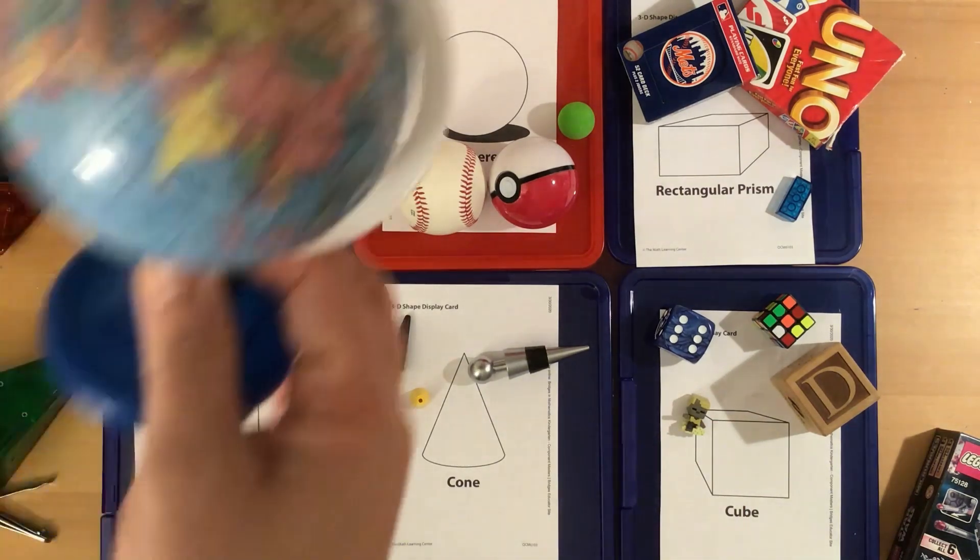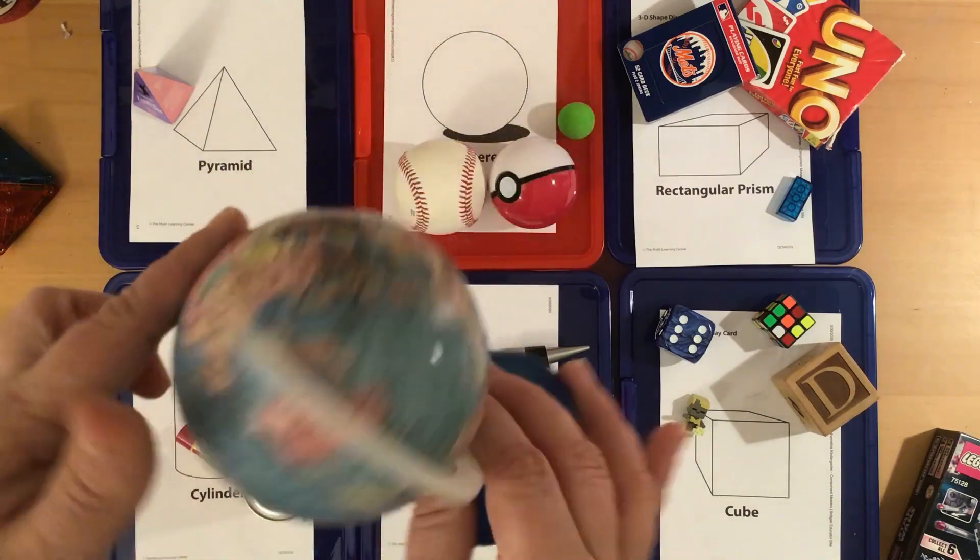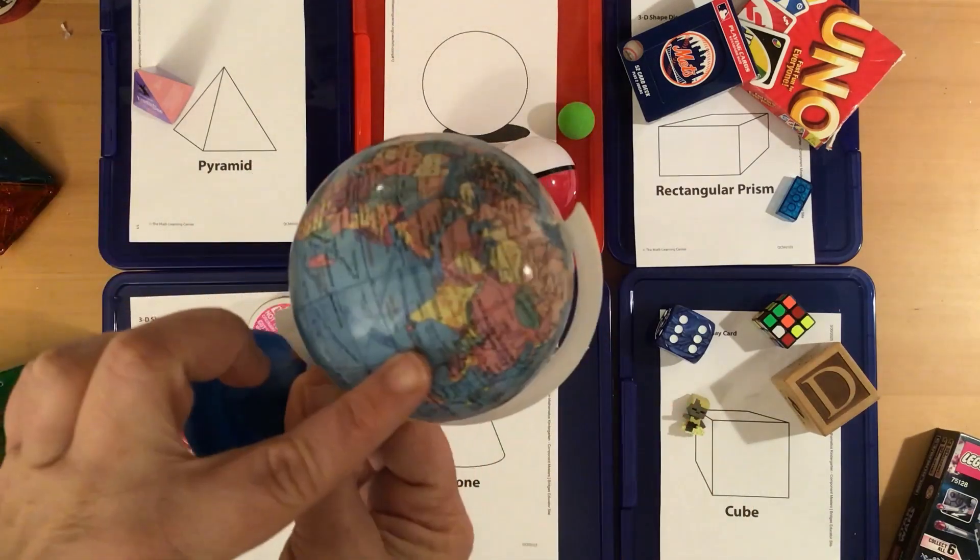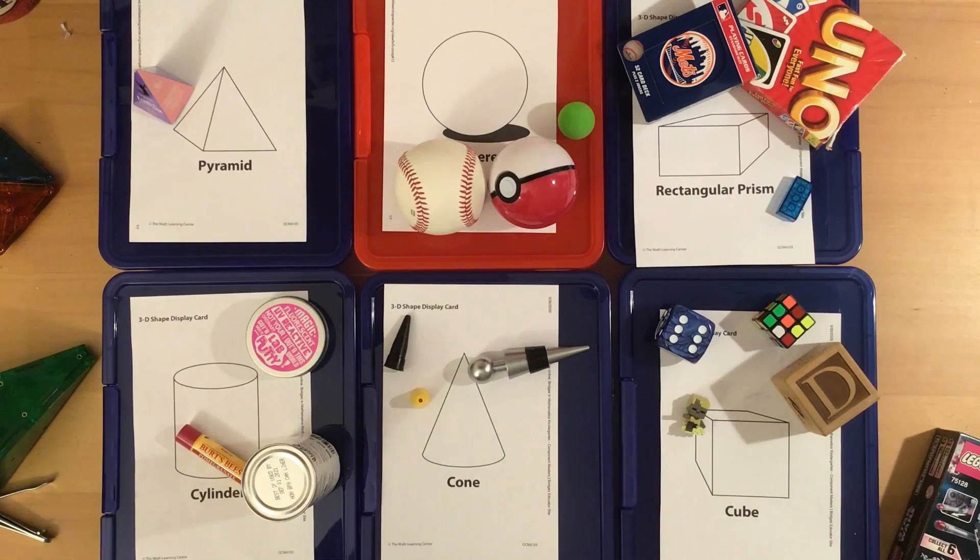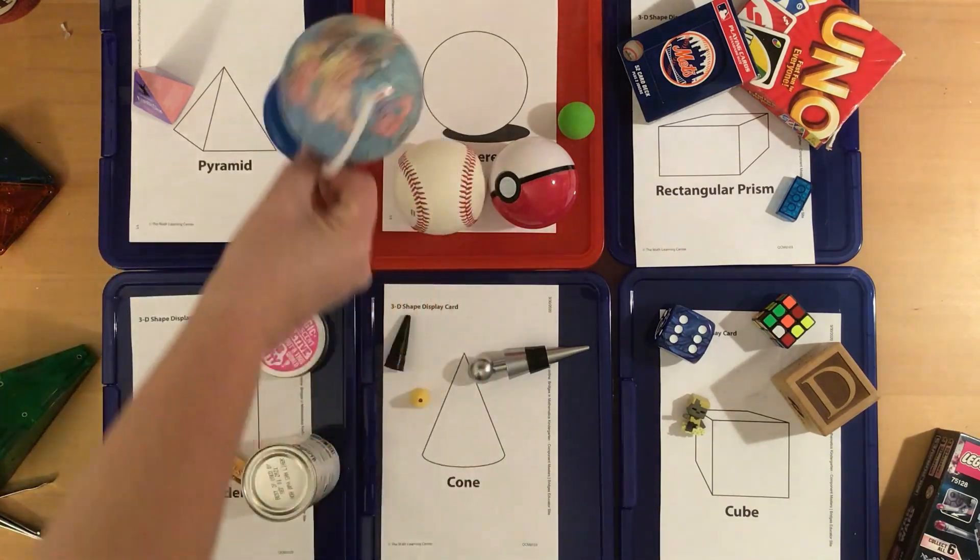What about this? If I just look at this part, what shape is that? Point to where it should go. You're right. The globe is a sphere.